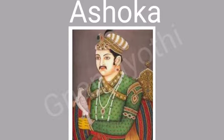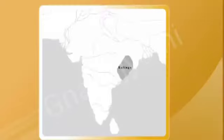Ashoka ascended the throne in 273 BCE. He is the first king to give the welfare of subjects as his top priority, declaring, 'My citizens are like my children.' At that time, a powerful kingdom, Kalinga, was not under Mauryan control. Kalinga controlled the land and sea routes to South India and Southeast Asia. Ashoka attacked Kalinga in 261 BCE and conquered it after a bitter struggle.